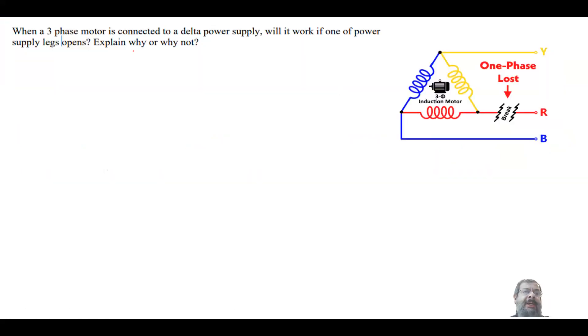The first question says: when a three-phase motor is connected to a delta supply, so basically you have a three-wire system, will it work if one of the power supply legs opens? So if I have an open circuit here, will the motor work? Explain why or why not.